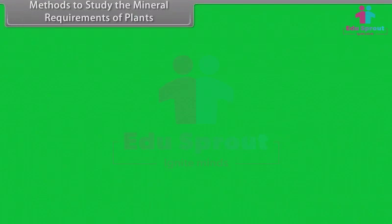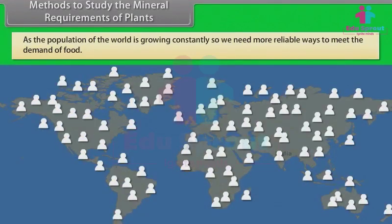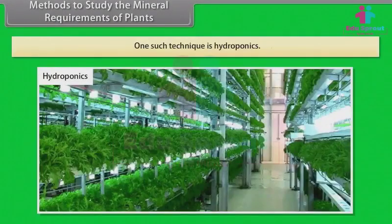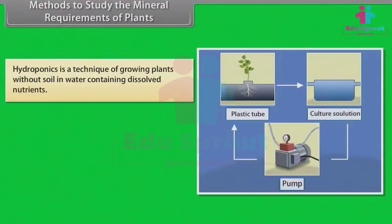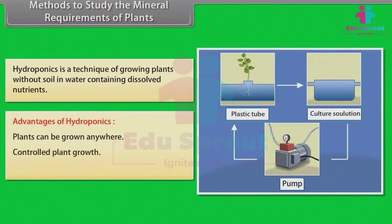As the population of the world is growing constantly, we need more reliable ways to meet the demand for food. One such technique is hydroponics — a technique of growing plants without soil in water containing dissolved nutrients. Advantages of hydroponics include: plants can be grown anywhere, controlled plant growth, and water and nutrients are conserved.